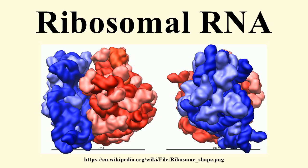rRNA sequences are widely used for working out evolutionary relationships among organisms, since they are of ancient origin and are found in all known forms of life. The ribosomal RNAs complex with proteins to form two subunits, the large subunit and small subunit.